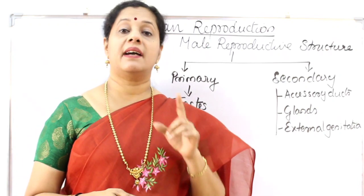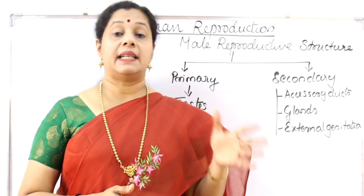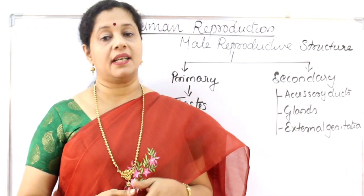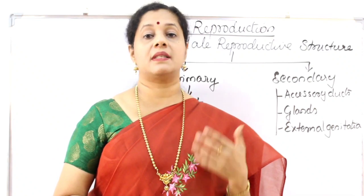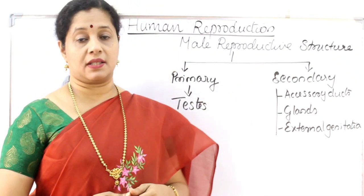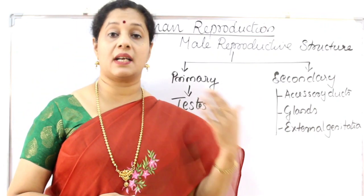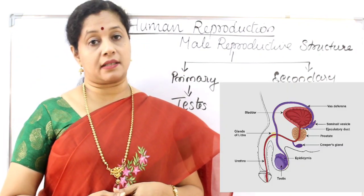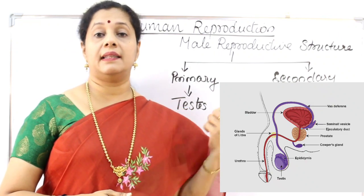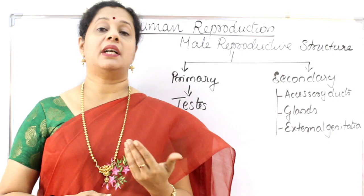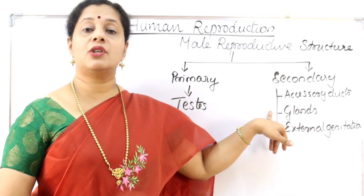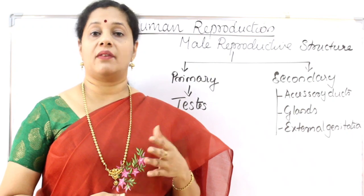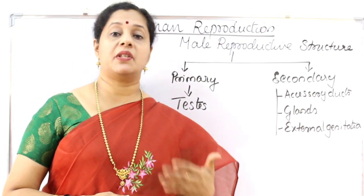Apart from production of gametes, the primary organs have one more function — they secrete hormones. The testis secretes testosterone whereas the ovary secretes oestrogen. We will study other hormones also. Basically, the primary sex organ is the one which produces the gametes, so the testis is the primary sex organ. Secondary sex organs are the other organs associated with it in order to facilitate the reproduction process — for example, accessory ducts which carry the sperms produced in the testis to the urinogenital canal. There are also glands associated with the male reproductive system, and external genitalia that help in insemination.